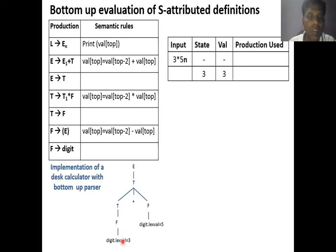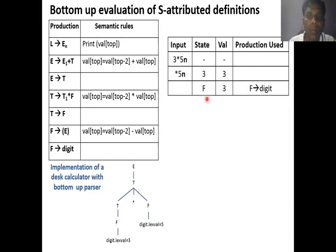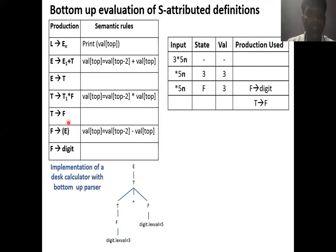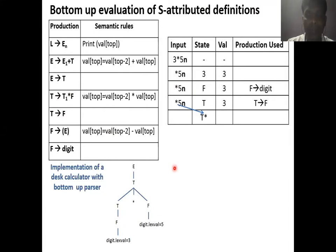I encounter digit and reduce it to F, keeping the value as is. Then F is reduced to T — we encounter the handle, the handle is replaced by the left-hand side, and since there is no semantic rule, the value is kept as is. Now, before replacing T by E, I push the star (*) onto the top of the stack. So the stack becomes: top minus one is T, top is star. Since there is no production for T star alone, I do not replace it yet. The stack shows T, star with values 3, star.